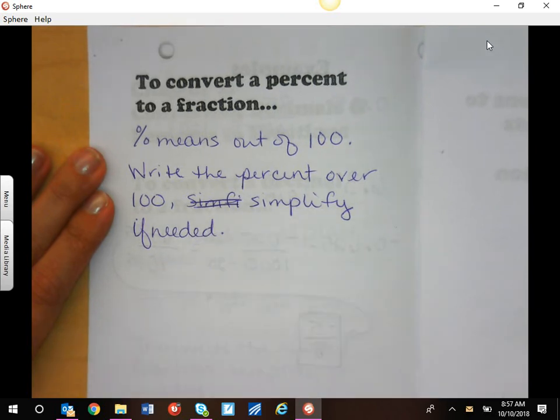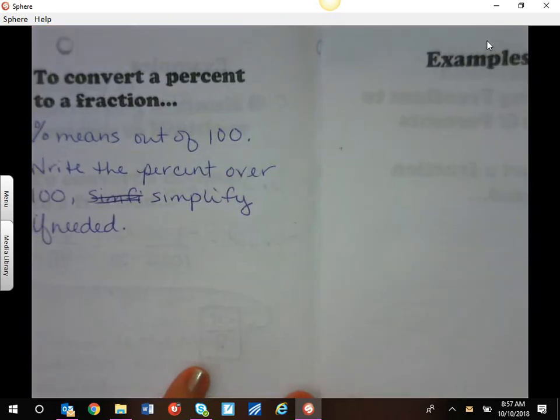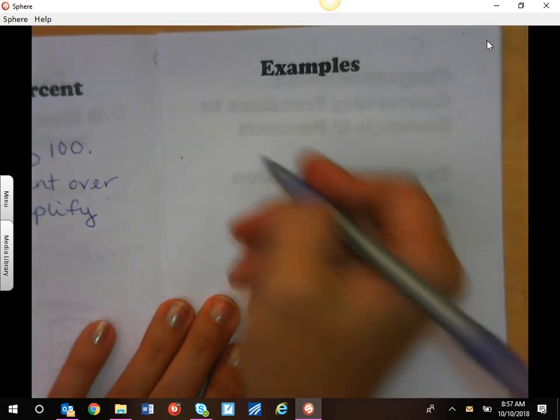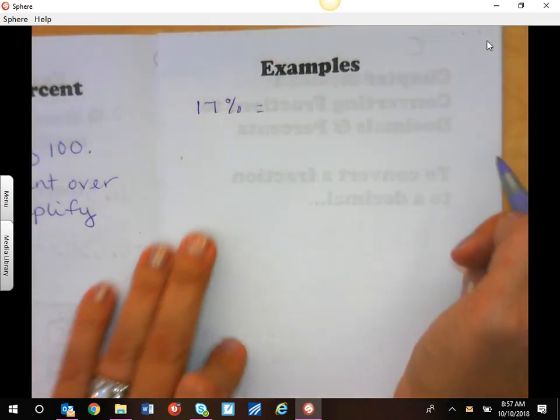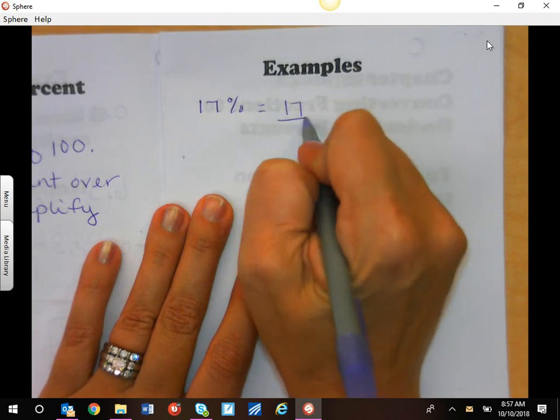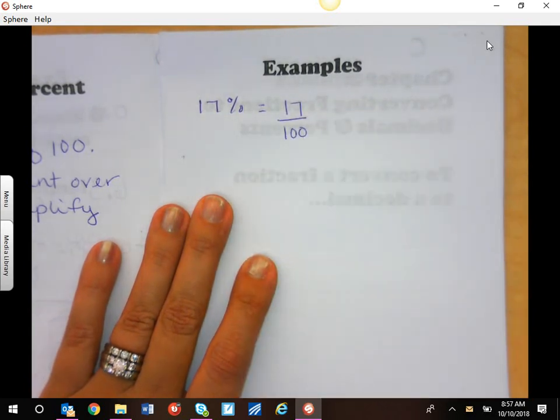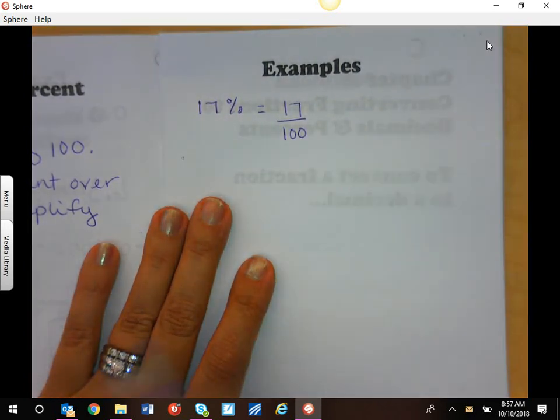So let's try that. If I gave you the example of 17 percent, I know that means that I have 17 out of 100. That does not simplify. 17 is a prime number, so we are done.